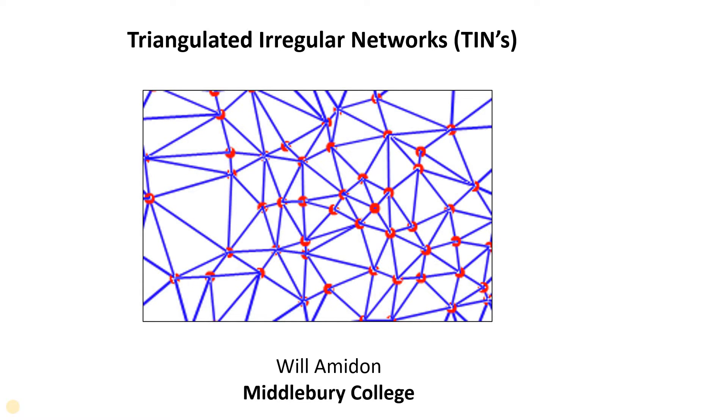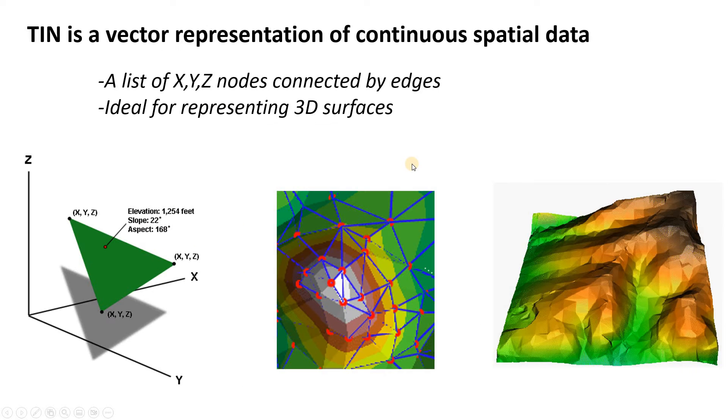This is something that you have probably seen, but maybe didn't understand exactly what you were seeing. So a TIN is essentially a vector representation of continuous spatial data. Another way to think about that is it's a list of X, Y, Z nodes that are going to be connected by edges.